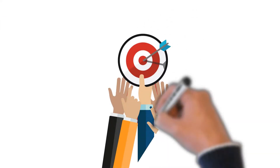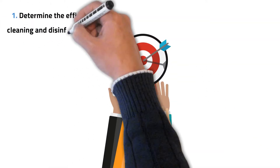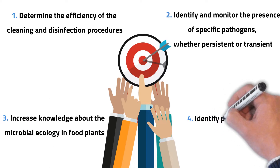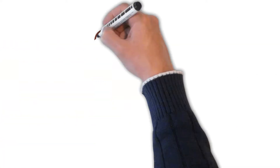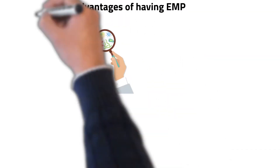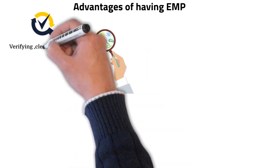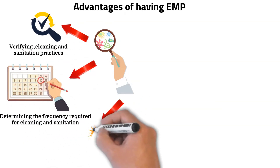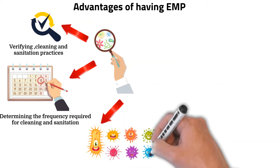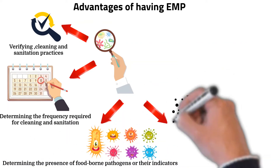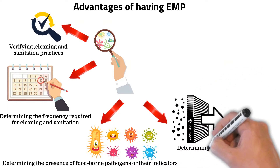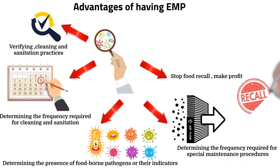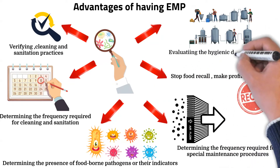Here are shown four major goals of the EMP system that are unique to every food industry. Having an EMP system will lead your industry to the following advantages: it helps verify cleaning and sanitation operation procedures, determines what frequency you need for cleaning and sanitation, identifies food-borne pathogen and indicator microorganism ecology in your factory premises, and determines frequency of special maintenance requirements. For example, you can get an idea of what frequency is needed to change your air filters by evaluating microflora. And finally, fabrication of equipment to maintain proper hygiene conditions.